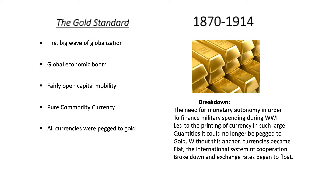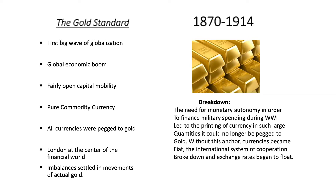Each currency was pegged to gold held in respective treasuries, and London was at the center of the financial world, clearing international payments, monitoring and accounting the system. London was the hegemon, militarily and financially. Imbalances that occurred were settled through actual transfers of gold from one country to another.